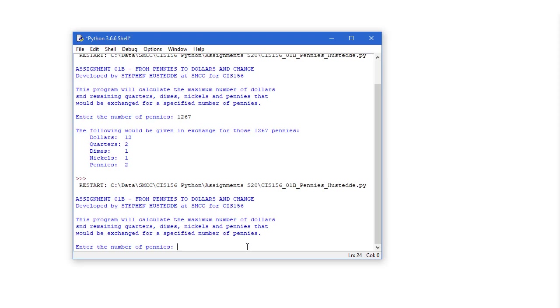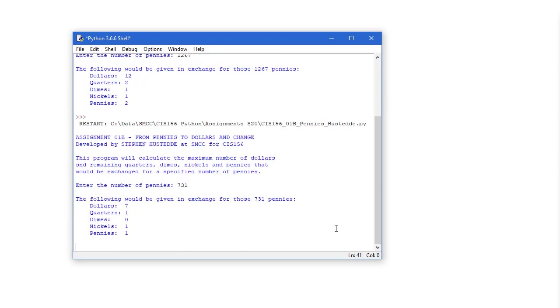I'm going to run it again. And this time we'll do seven thirty-one. Stacy, we get seven dollars, one quarter, no dimes, a nickel, and a penny. So again, you can use my numbers here to make sure that your project is working fine. When you're done with it, submit the .py file in the Canvas where I can grade it.